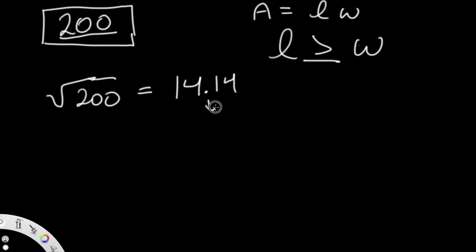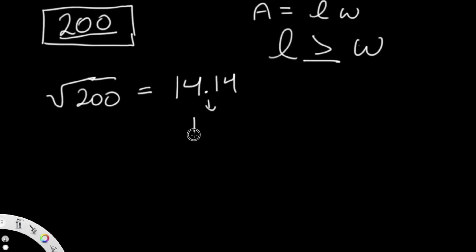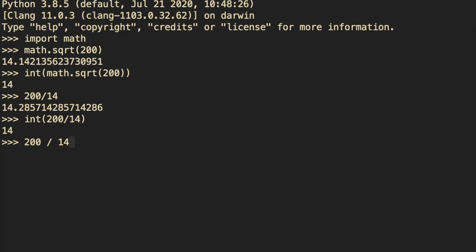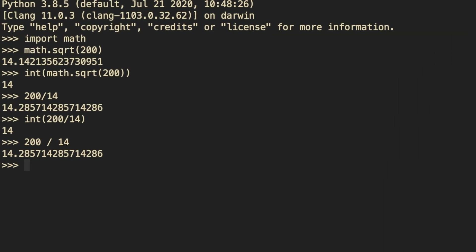So 14 is our starting value. To find the other parameter y, we compute 200 ÷ 14 = 14.28 — not an integer, so 14 is not our answer. We decrease by 1 and try 13: 200 ÷ 13 = 15.38 — also not an integer. Decrease again to 12: 200 ÷ 12 is still a floating point, not our answer. Decrease again to 11 and check 200 ÷ 11.